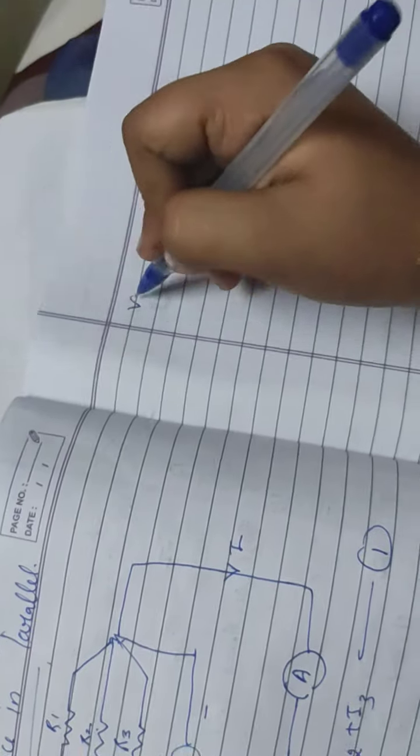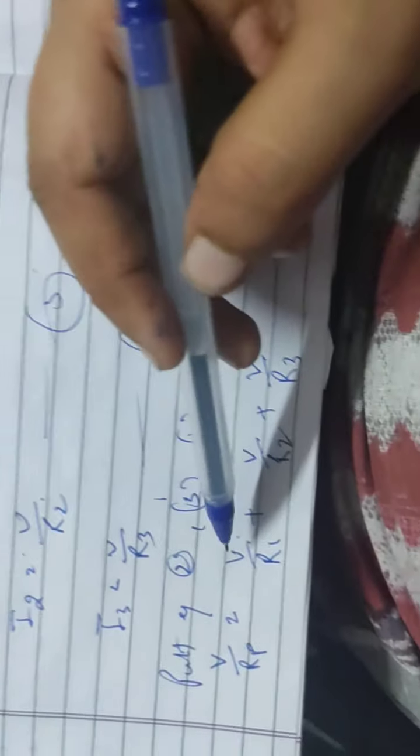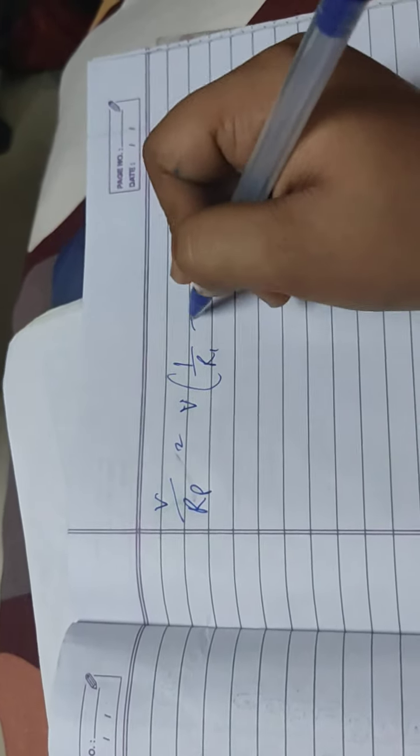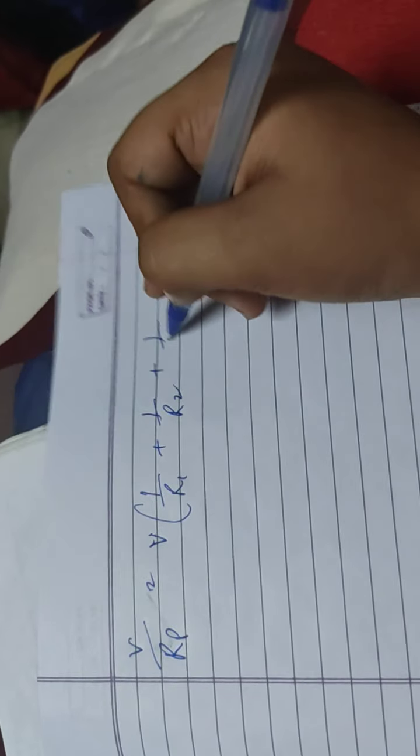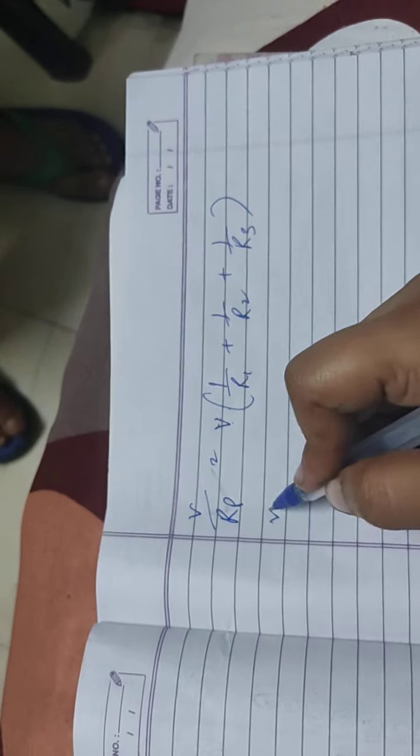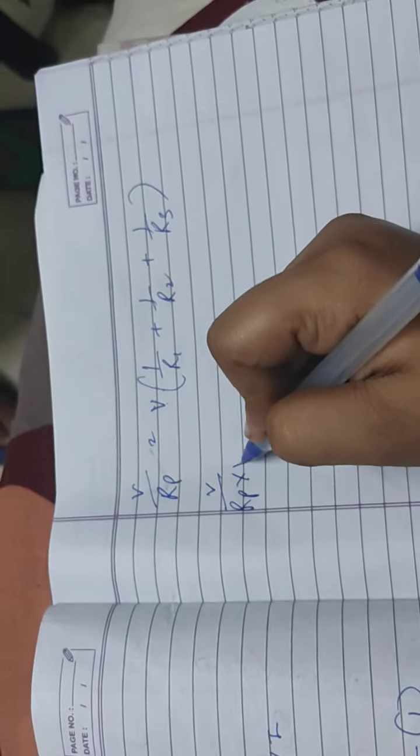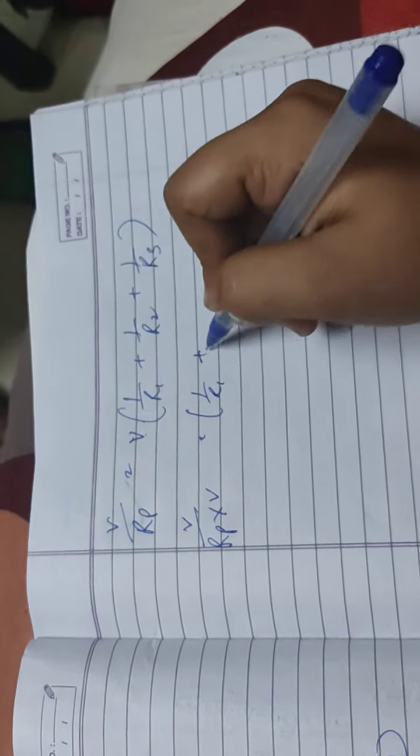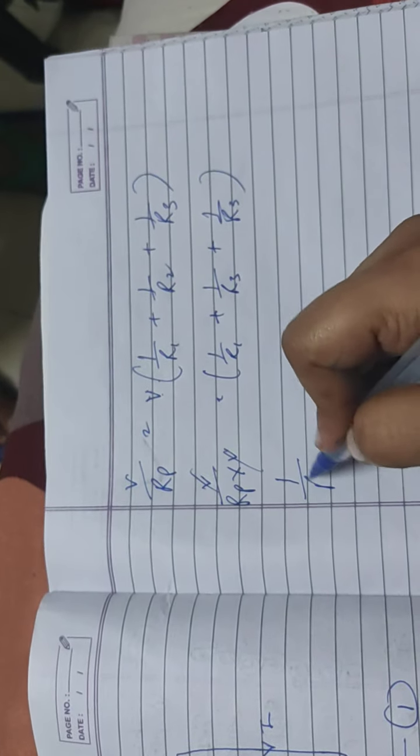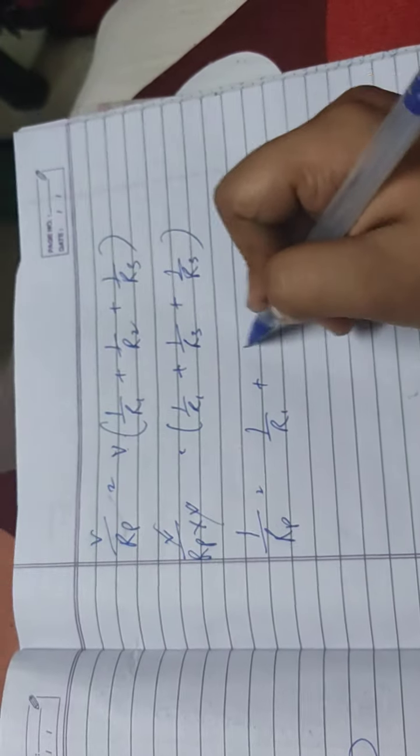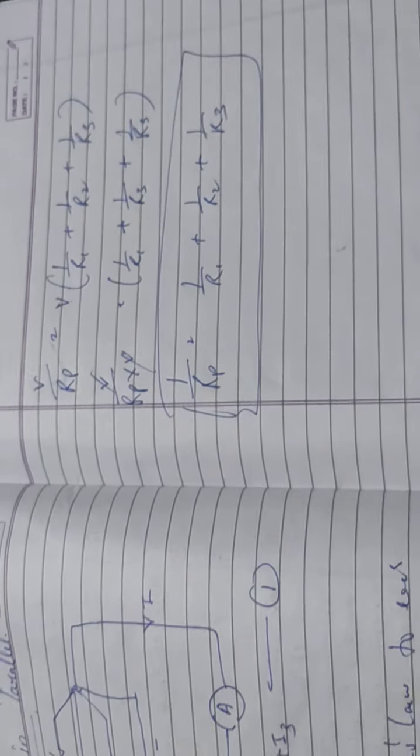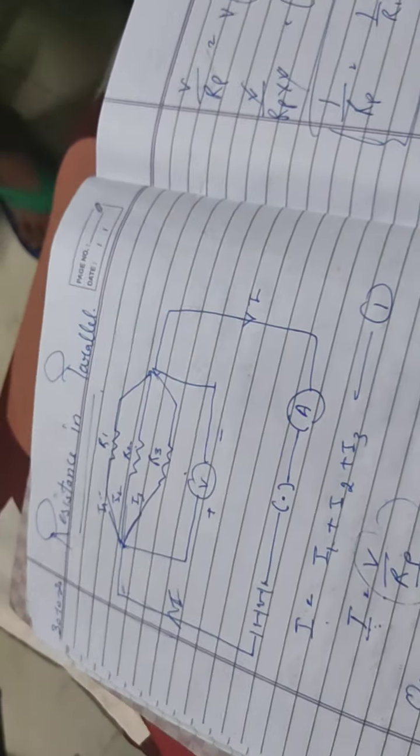Next time, V is common on both sides. Divide by V on both sides. V cancels. So we get 1 by Rp equal to 1 by R1 plus 1 by R2 plus 1 by R3. So this is the resistance in parallel, the derivation.